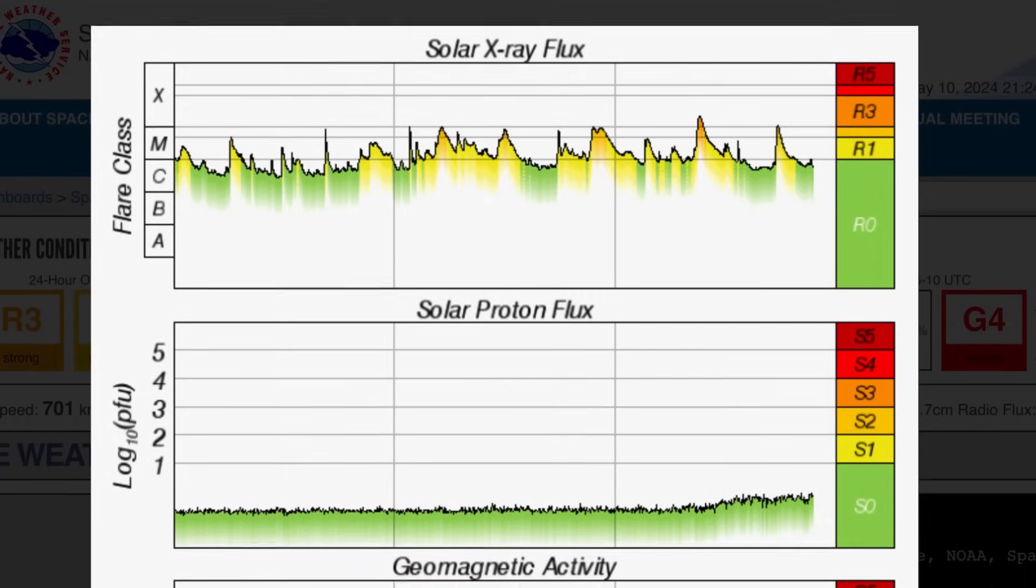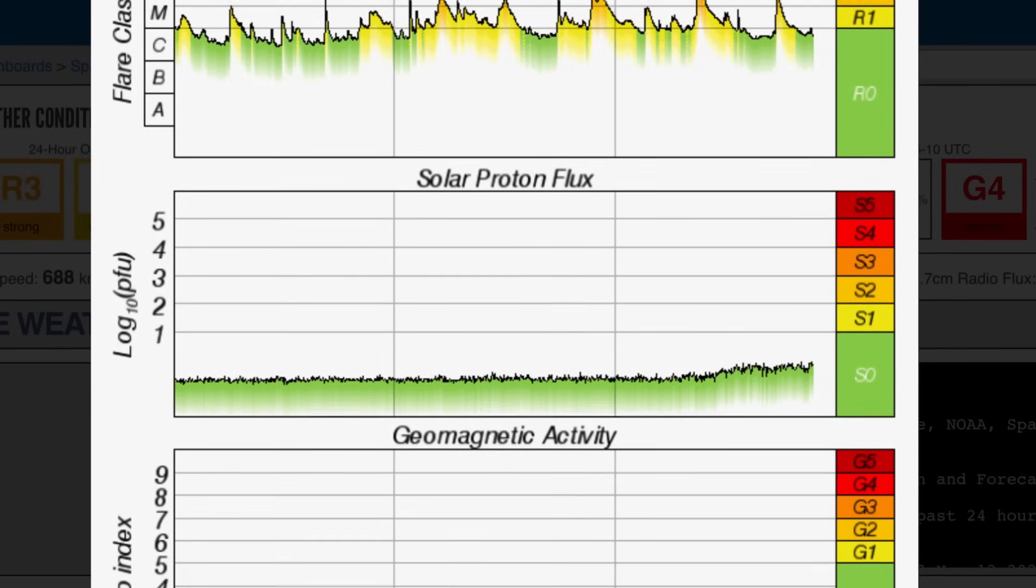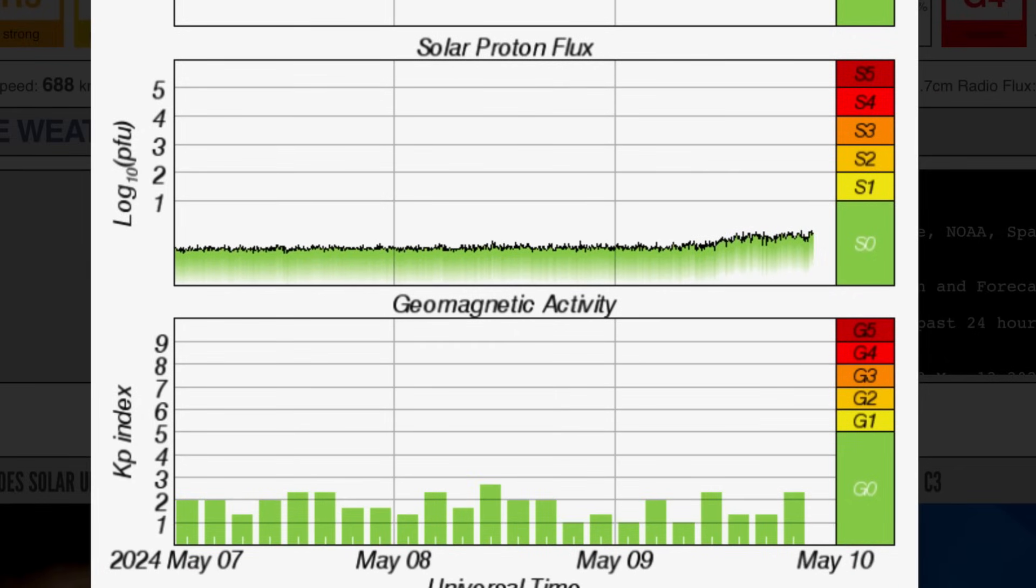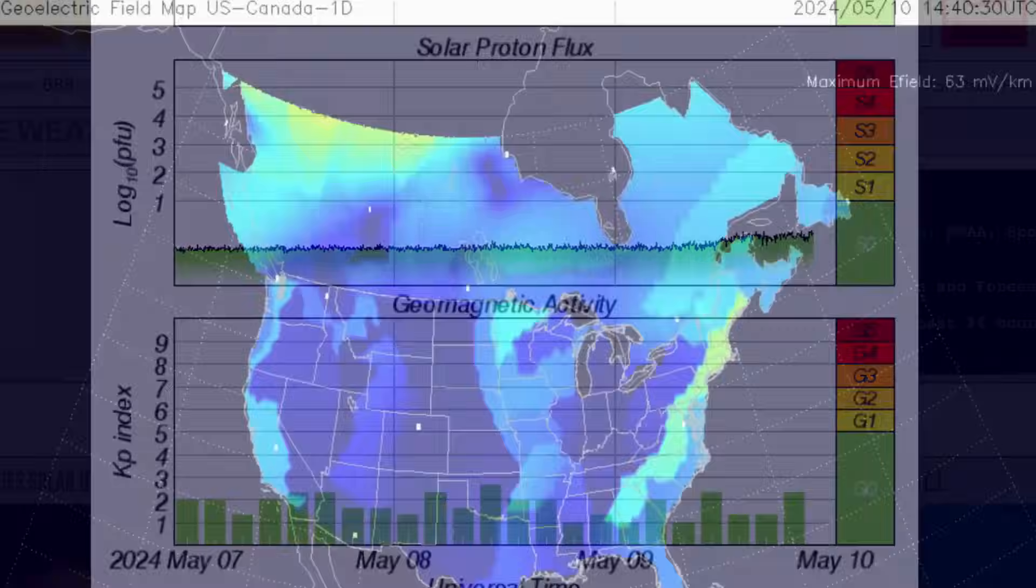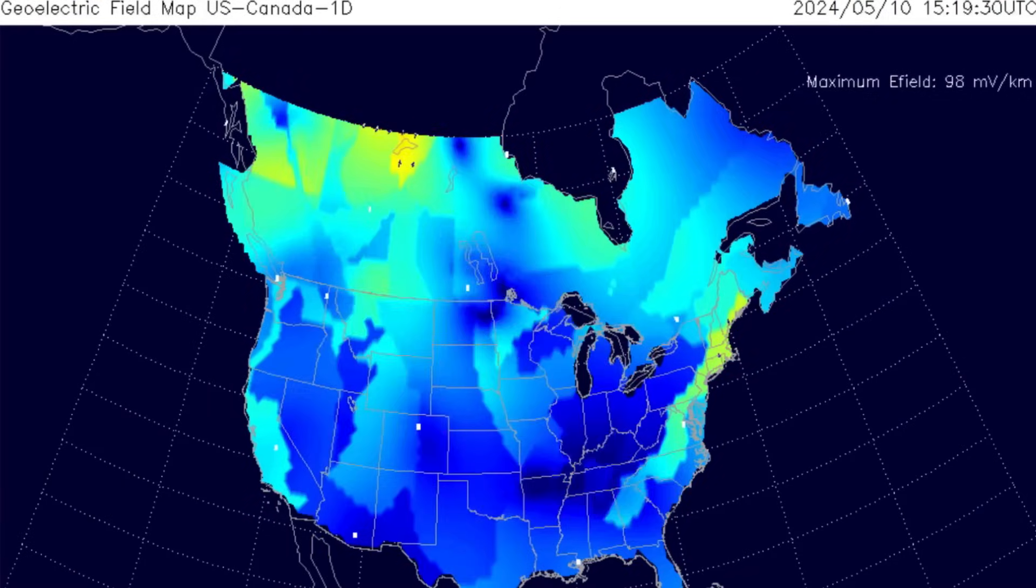Solar X-ray flux very busy the last two days. So, minor X-class, multiple M-class, solar proton flux rising and steadily, geomagnetic activity KP 9, as I said. And have a look here.